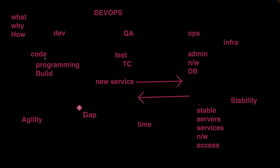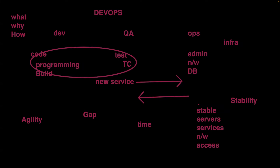Whenever developers write code, it's tested by QA, who sends feedback back to developers to fix it. I'm including these two teams together and calling them 'dev.' Dev teams don't understand the challenges of ops, and ops doesn't understand the challenges of dev. Hence, a gap arises between the teams.